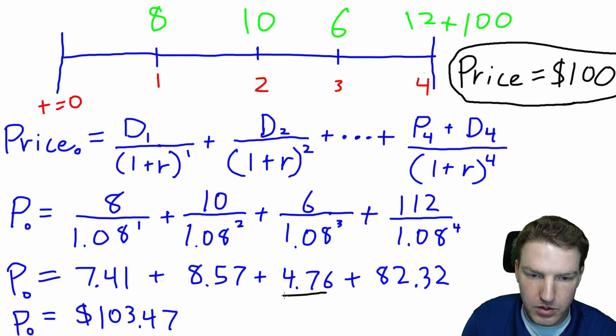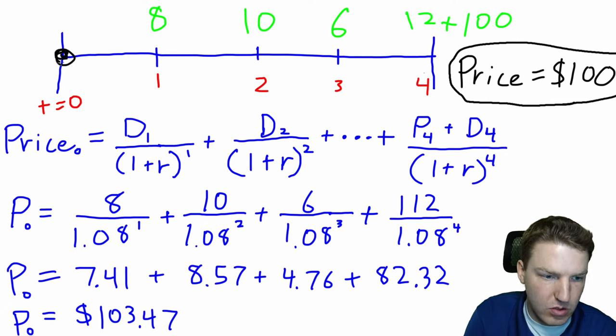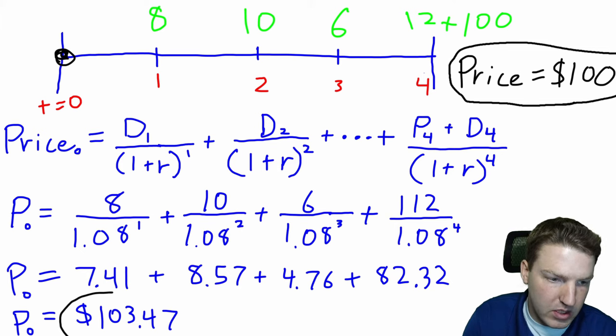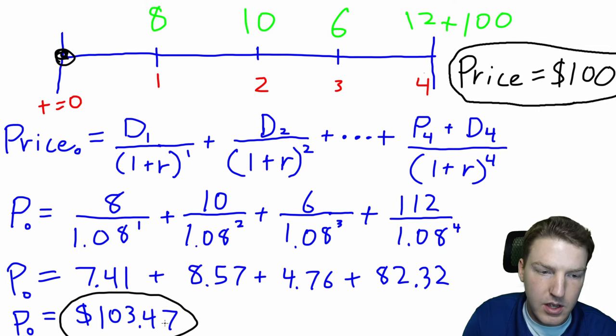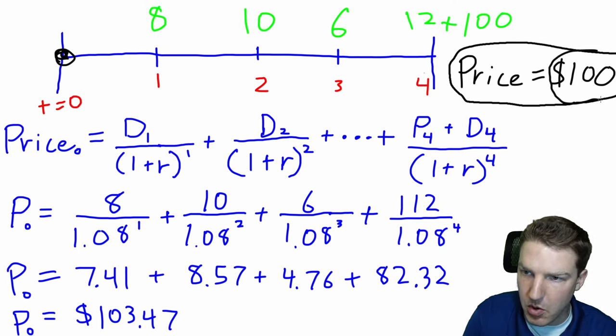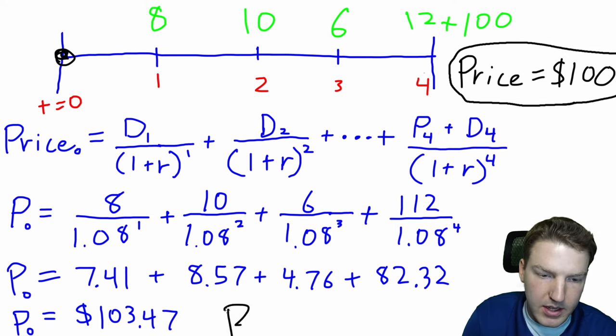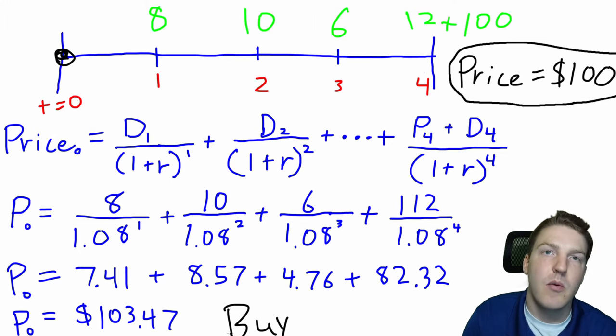And we do that for the third cashflow and the fourth cashflow. When we discount all four of these cash flows back to present value, so today we come up with an intrinsic value or an expected price of $103.47. Now this $103.47 is higher than what the market is currently pricing the stock at of $100, which means that this stock is definitely a buy based on the dividend discount model.